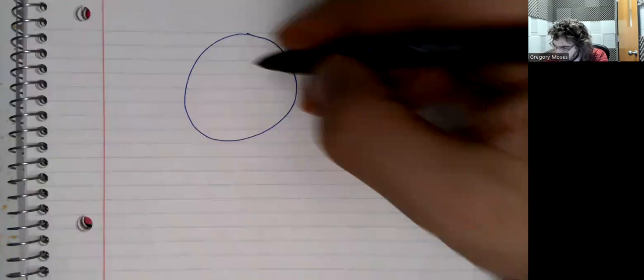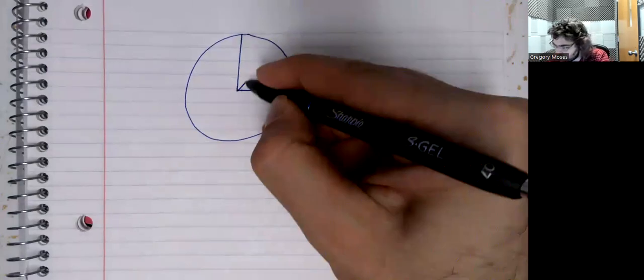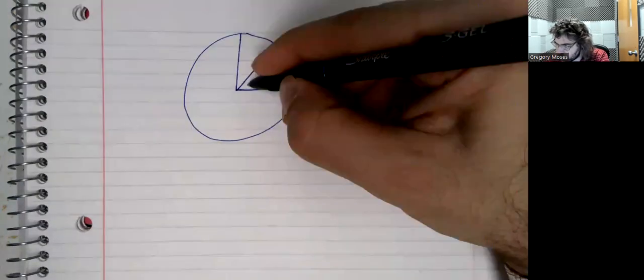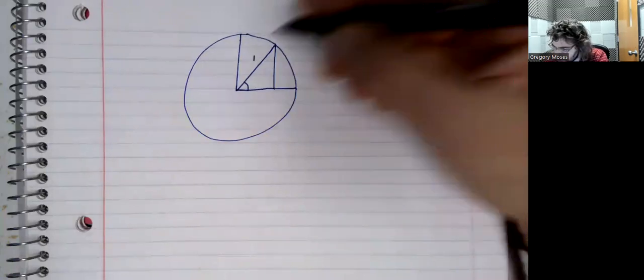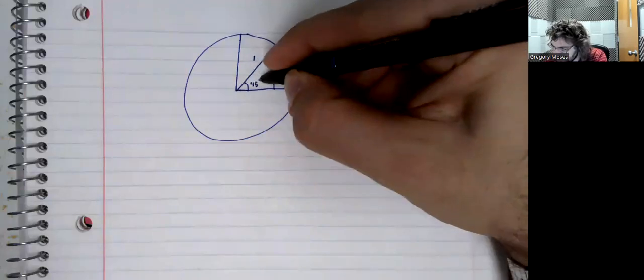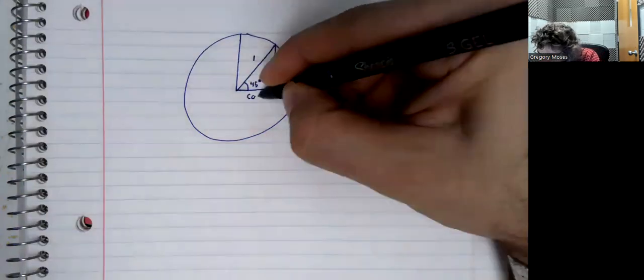In terms of this unit circle, so we've got a 45-degree angle. This is the unit circle. The hypotenuse is 1. Here's our 45-degree angle. So here's the cosine of 45 degrees.